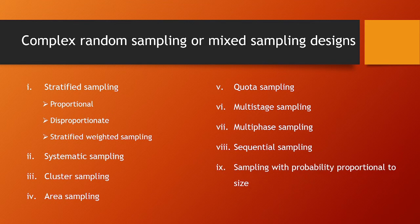The next one is sampling with probability proportional to size. When the population is divided into a number of clusters and all clusters do not have the same number of elements, it is considered appropriate to apply a random selection process where the probability of each cluster being included in the sample is proportional to the size of the cluster. Here, size may be expenditure, value, population, etc.